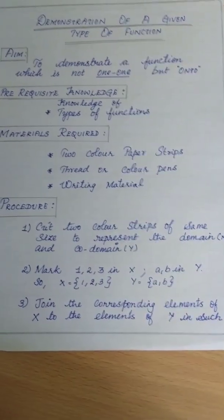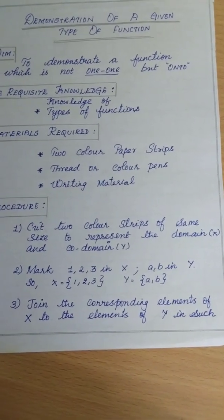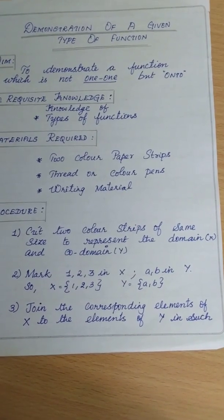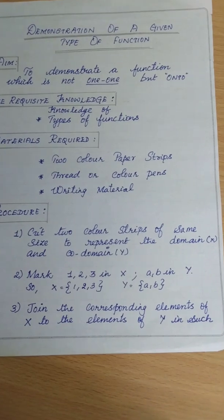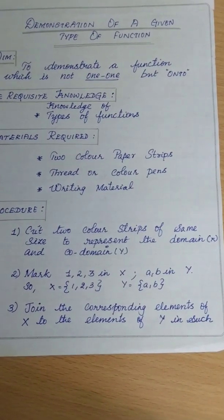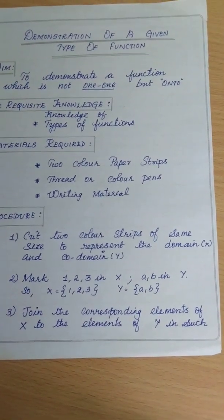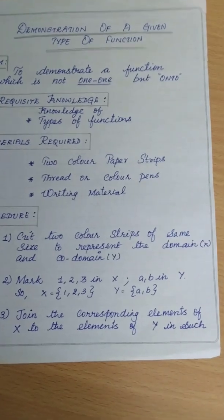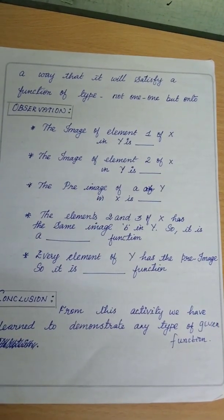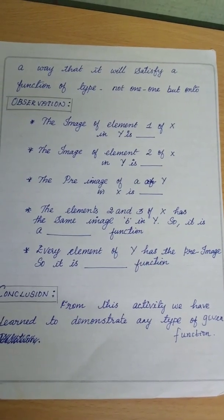Now the procedure. Cut two color strips of the same size to represent the domain X and the co-domain Y. Mark the elements 1, 2, 3 in X and a, b in Y. So the set X is {1, 2, 3} and set Y represents {a, b}. Join the corresponding elements of X to the elements of Y in such a way that it satisfies the given type of function — not one-to-one but onto.